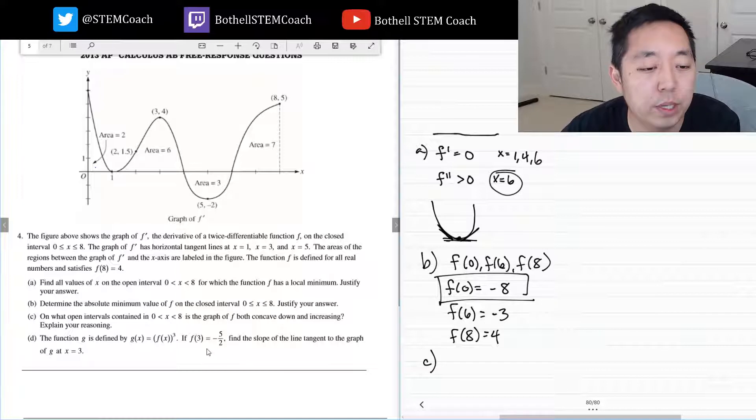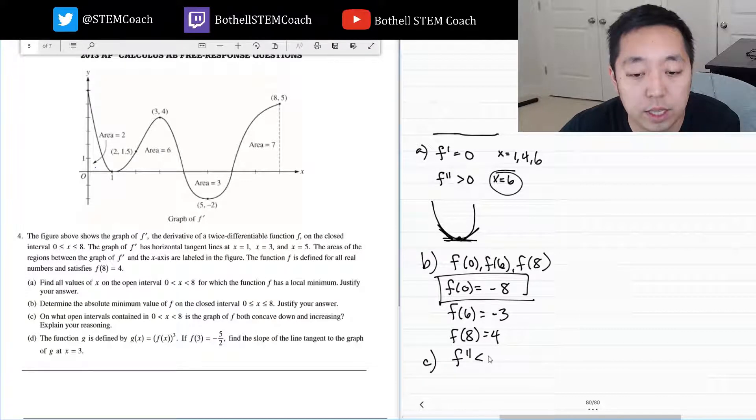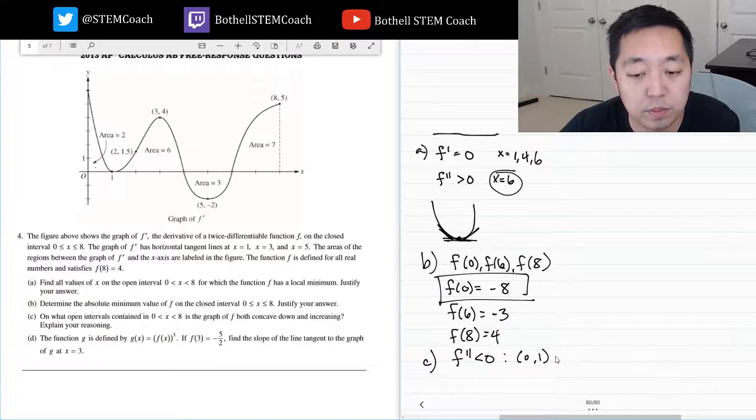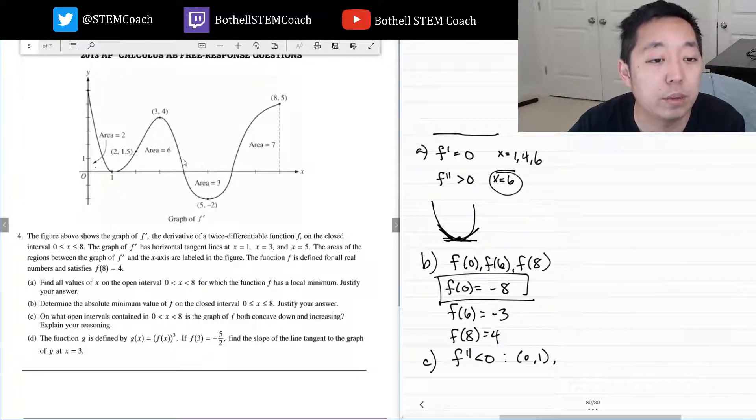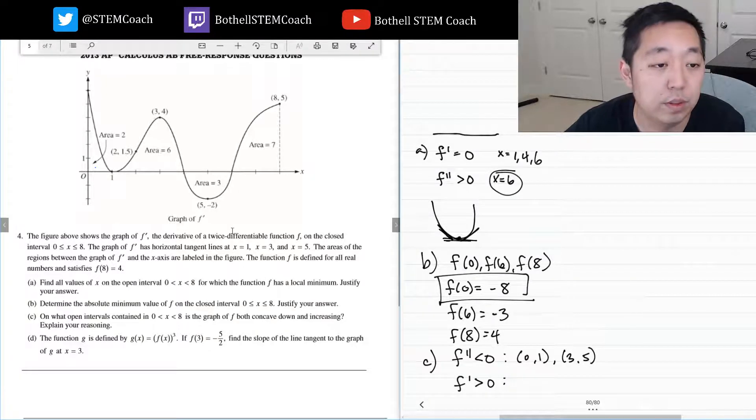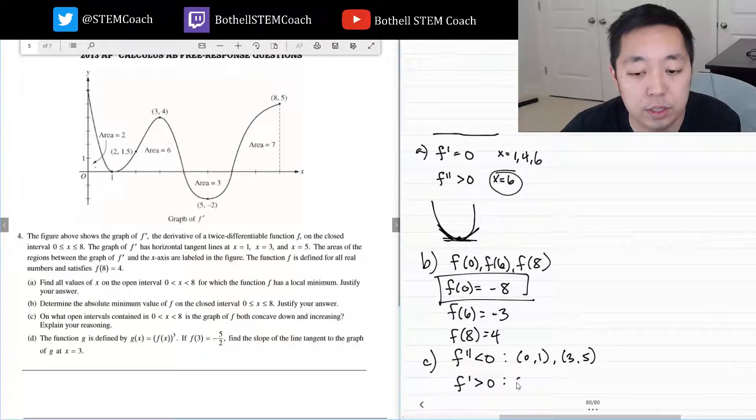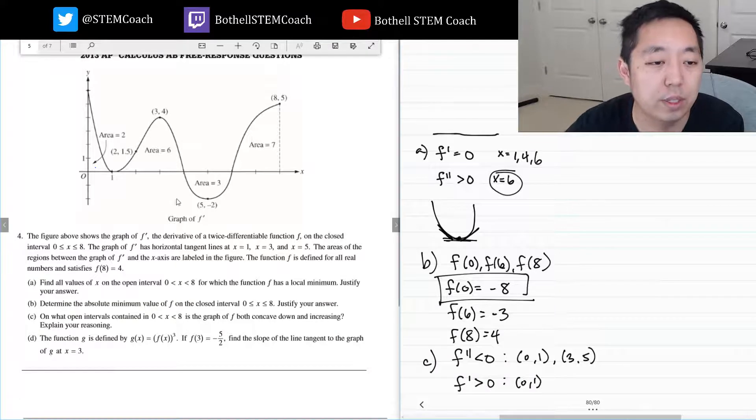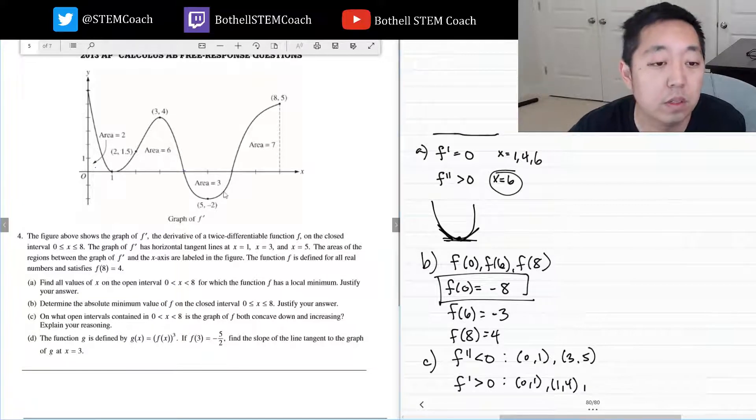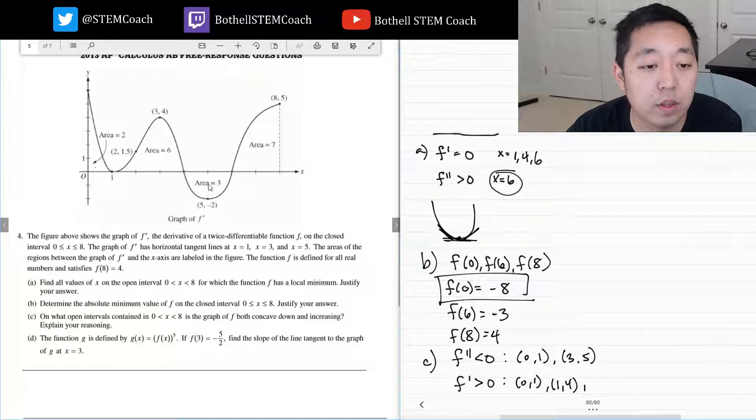Determine which open intervals contain where the graph is both concave down and increasing. Concave down is the regions where the second derivative is less than zero, and that means the slopes of this graph. So that's between 0 and 1 and between 3 and 5. Increasing means the first derivative is greater than 0. First derivative is greater than 0 again between 0 and 1. We don't include 1 because it's at 0. Then it's above the x-axis between 1 and 4.